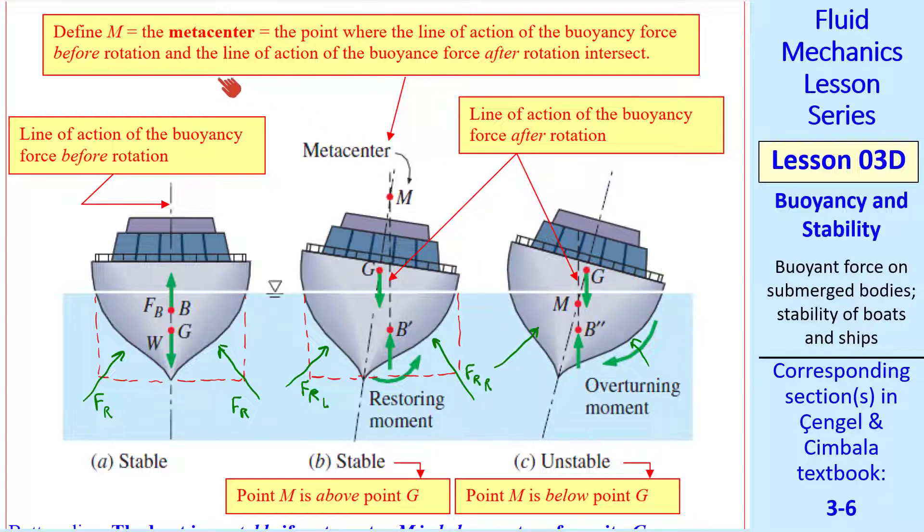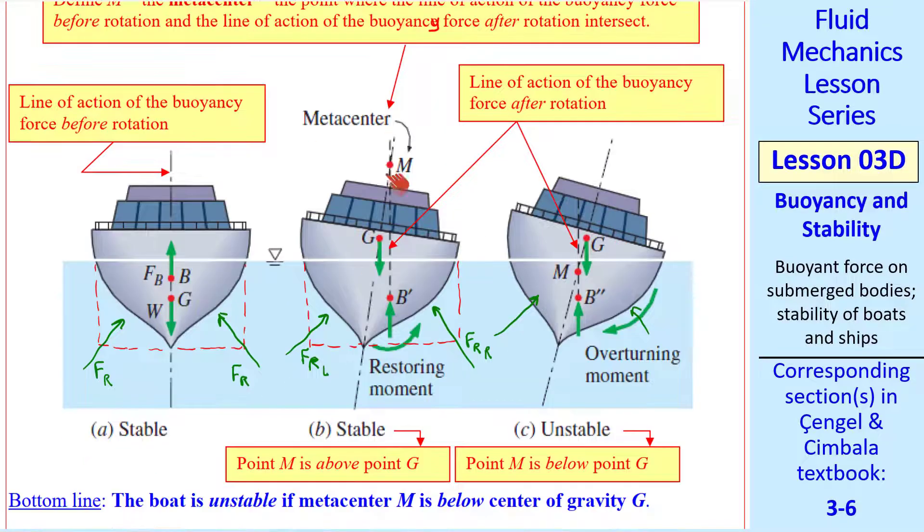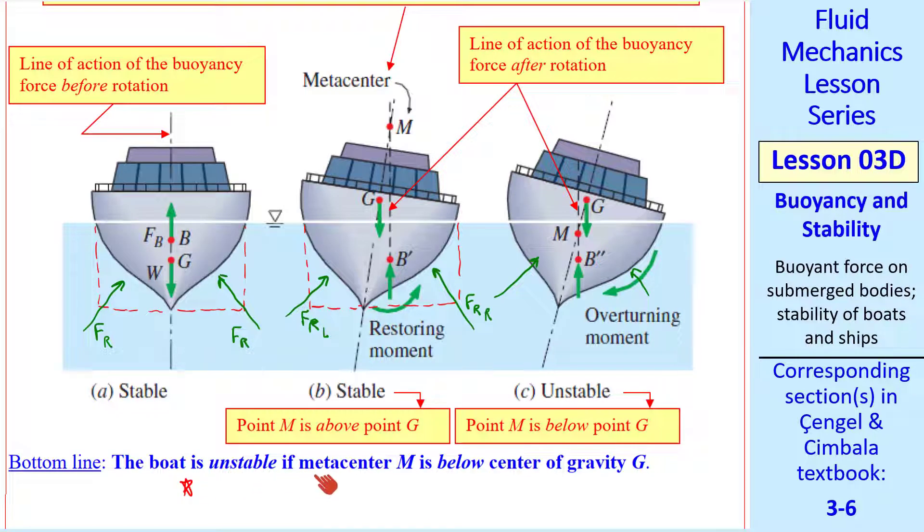The math to figure this out gets a little bit tricky. There's something called a metacenter, which is the point where the line of action of the buoyancy force before rotation and the line of action of the buoyancy force after rotation intersect. This is the line of action before rotation, right through the middle of the boat, which we also draw here. But the new line of action, a combination of both of these forces, is here, where those meet is the metacenter. For a case in which M is above G, the boat is stable. If M is below G, the boat is unstable and will overturn or capsize. The bottom line is written here, a boat is unstable if its metacenter M is below the center of gravity G.